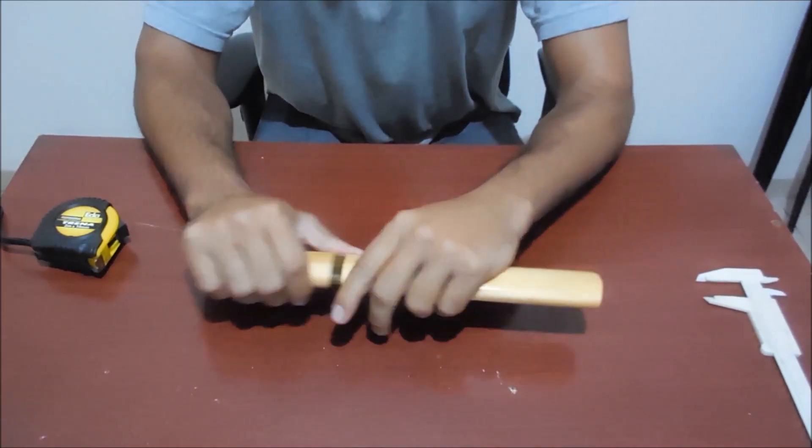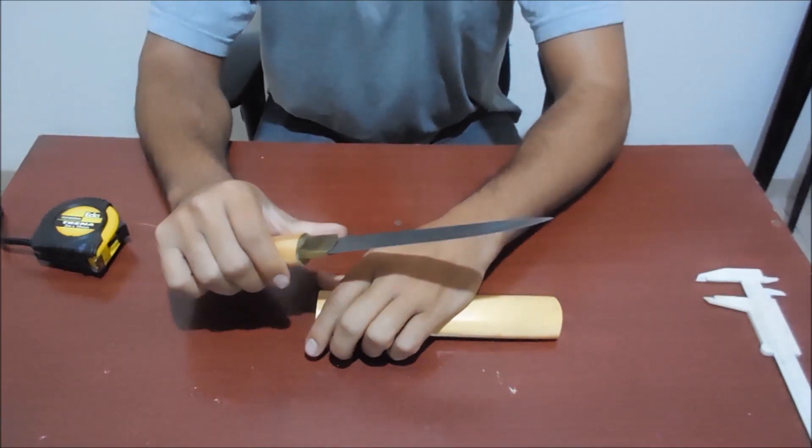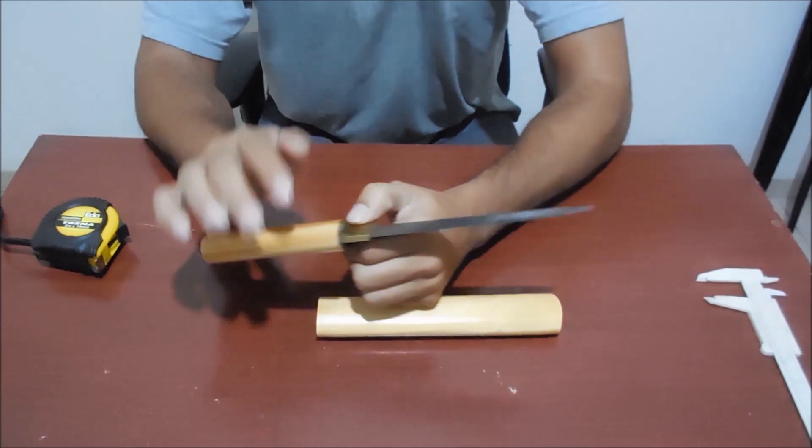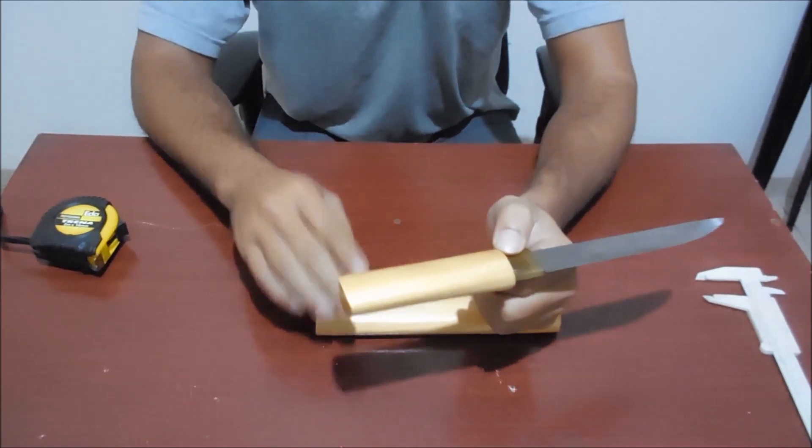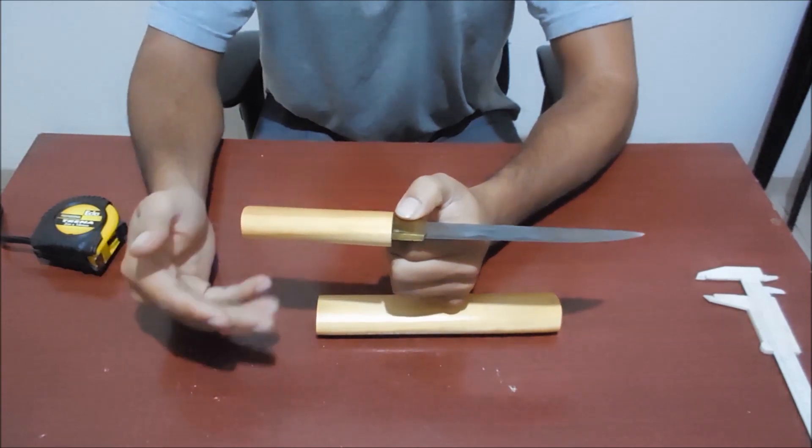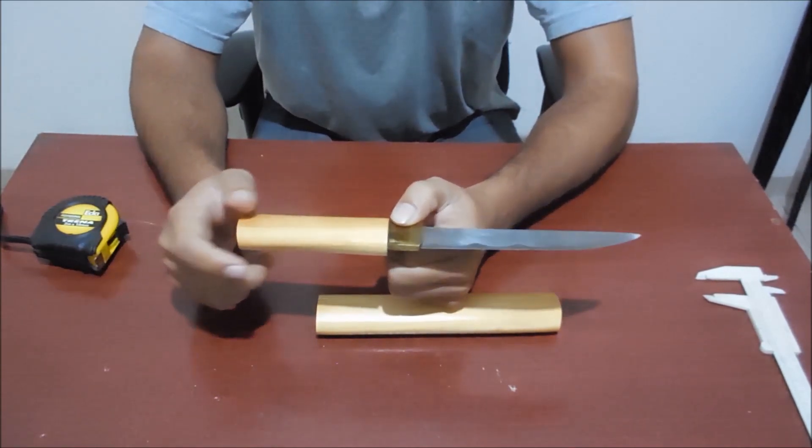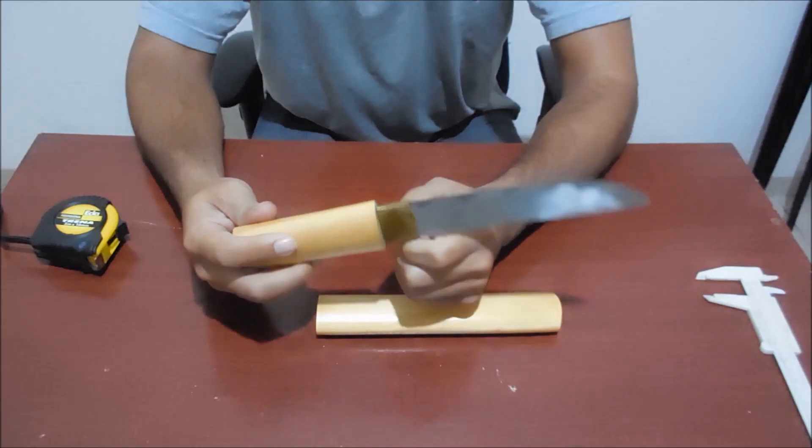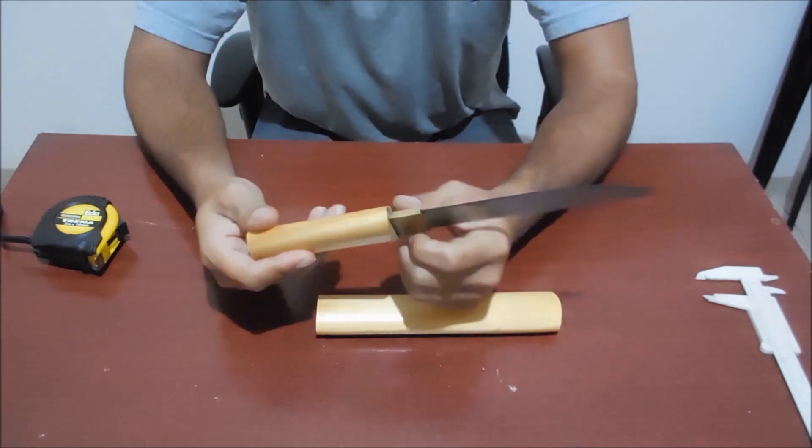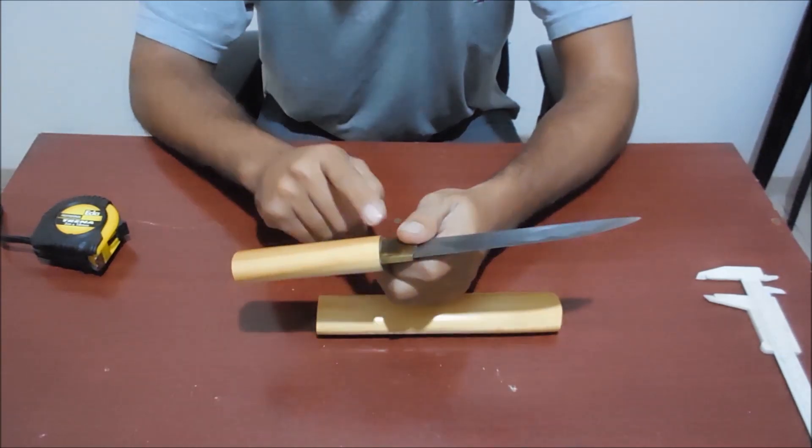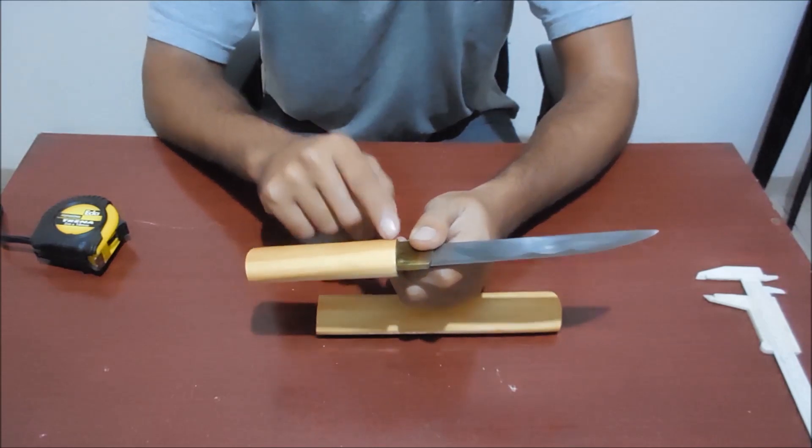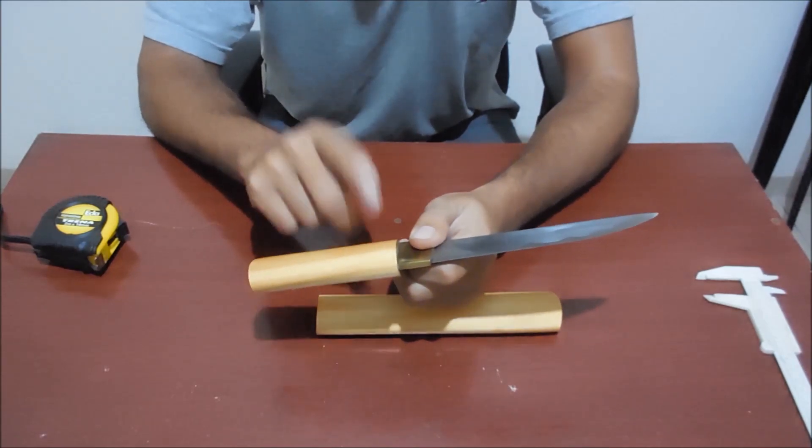But very, very simple. So what you would expect for a Shirasaya. Probably I can change the fittings. I can change the handle and the Saia to a normal Koshirai. If I find other pieces for it. And I also don't know how is the Nakago, the Tang, inside the handle of this blade.